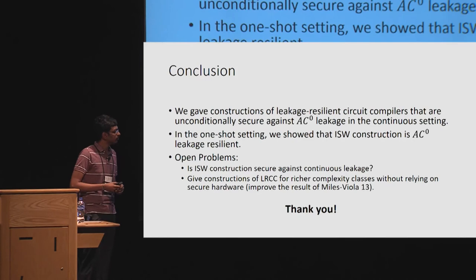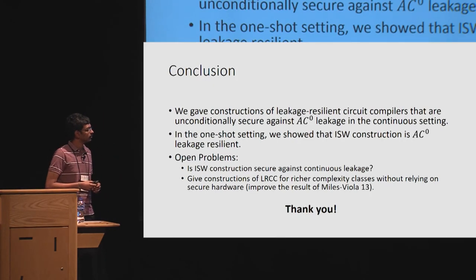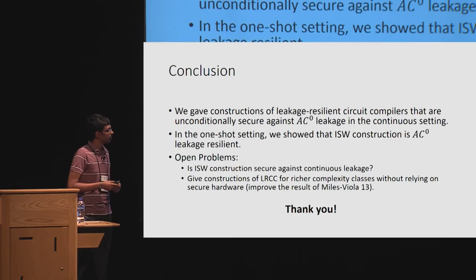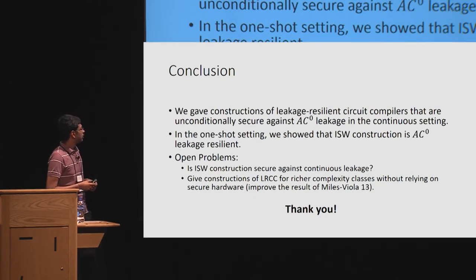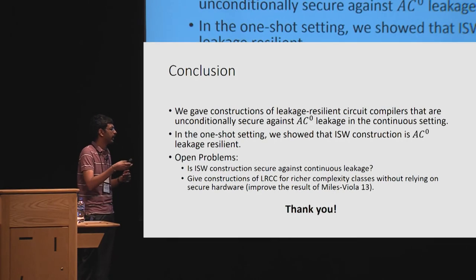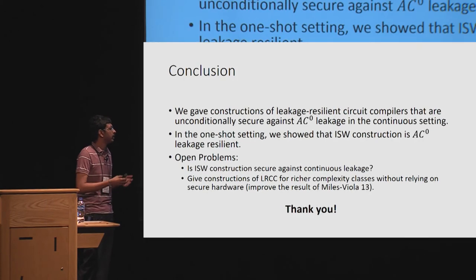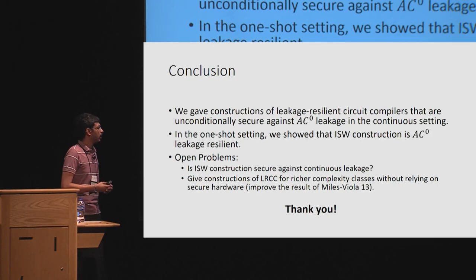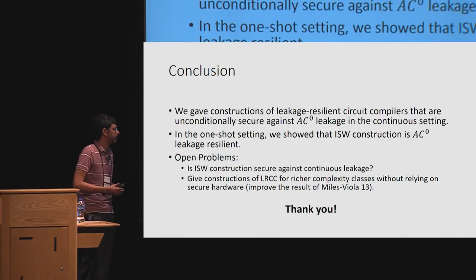This construction elegantly resolves an open question from the past decade. Regarding efficiency optimizations: the overhead of the circuit size scales roughly as K squared, where K is the security parameter. For wire probe leakage, there are better constructions scaling linearly or even polylogarithmically in the security parameter. Currently, we don't know whether those optimizations can be achieved in the AC0 setting, so that would be very interesting future work.